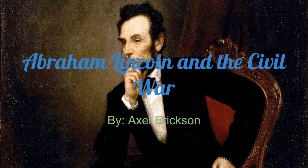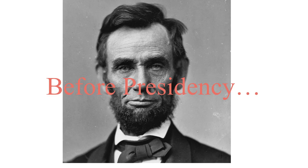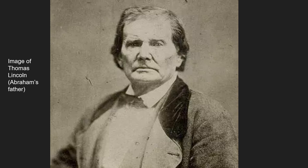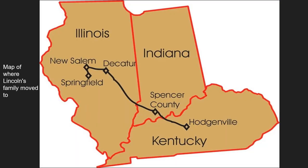Abraham Lincoln and the Civil War by Axel Erikson. Abraham Lincoln was born on February 12, 1809 in Hardin County, Kentucky. His parents were Nancy and Thomas Lincoln, and he had two siblings, Sarah Lincoln and Thomas Lincoln. In 1816, his family moved to southern Indiana. The only formal schooling he got was three brief periods of time throughout his early life, since he had to work to help his family.